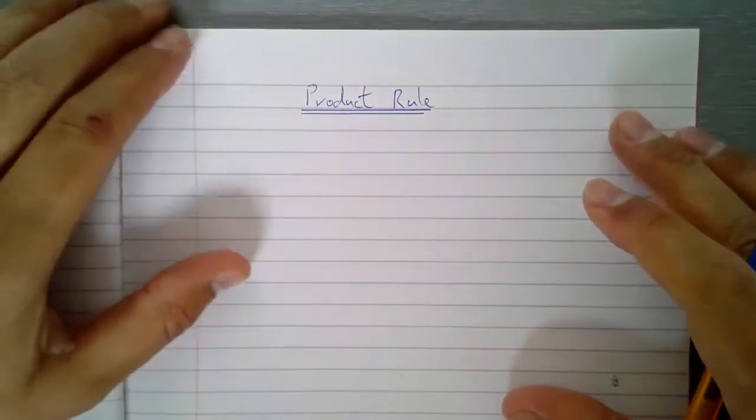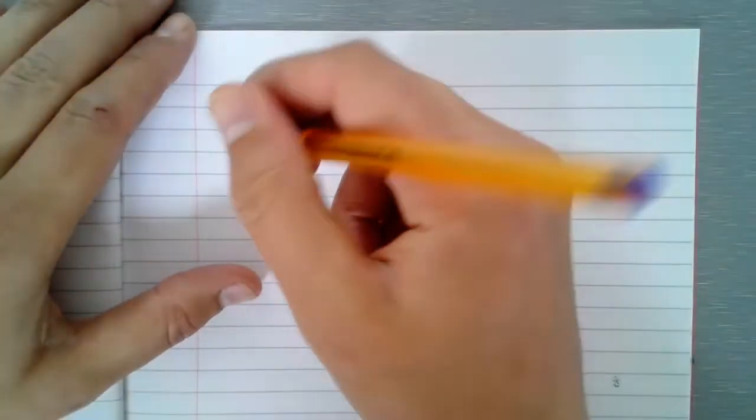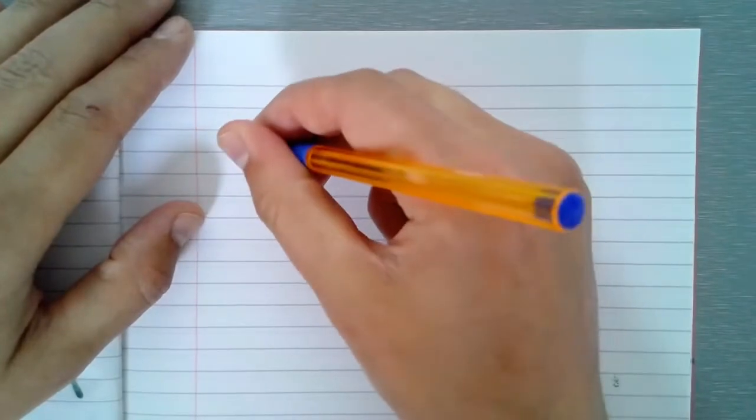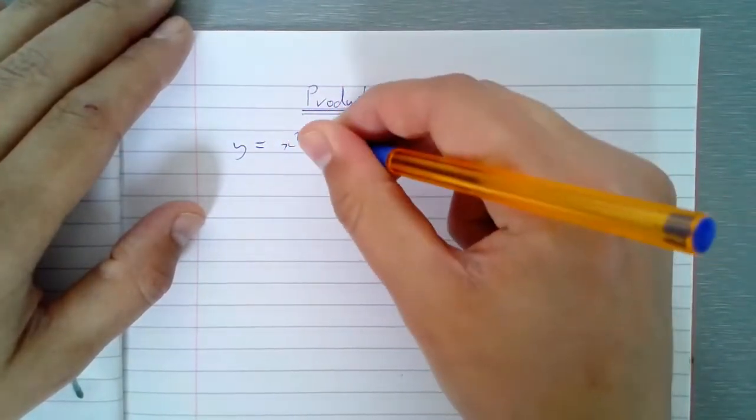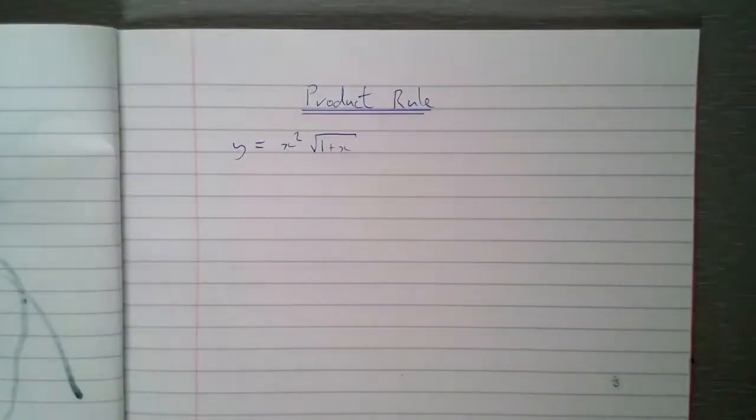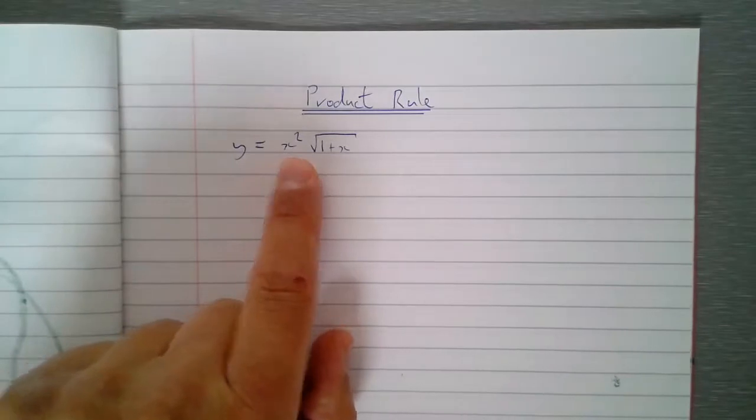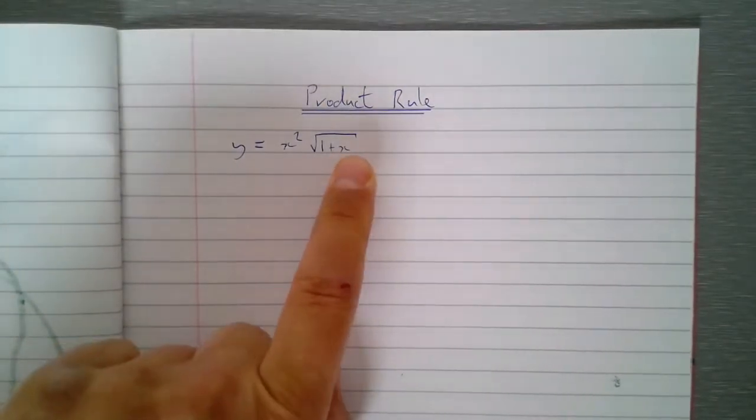Without laboring the point very much at all, if I just wanted to say let's differentiate something like y equals x squared root one plus x, that would be really quite tricky to do. I could have made this simpler by saying it's x squared and this is one plus x all cubed in a bracket.